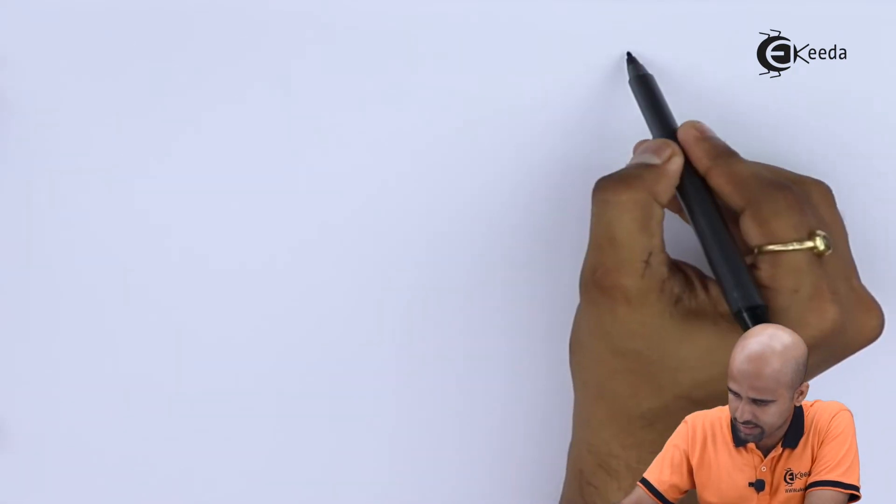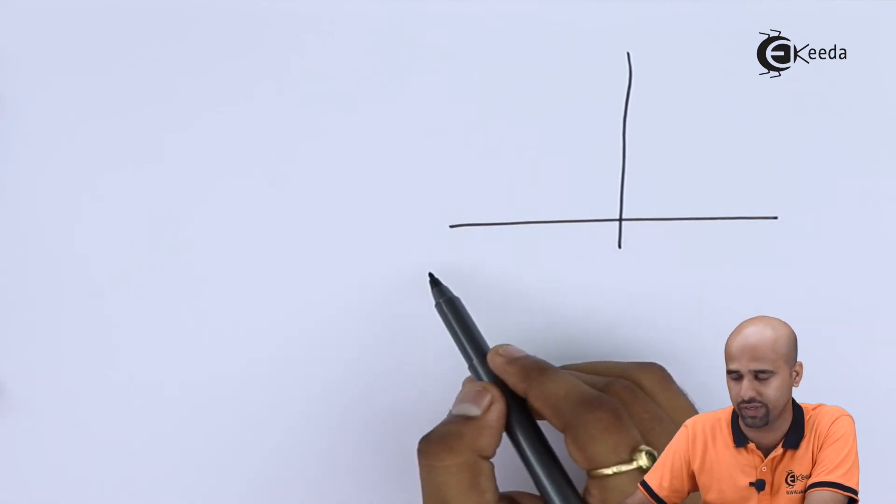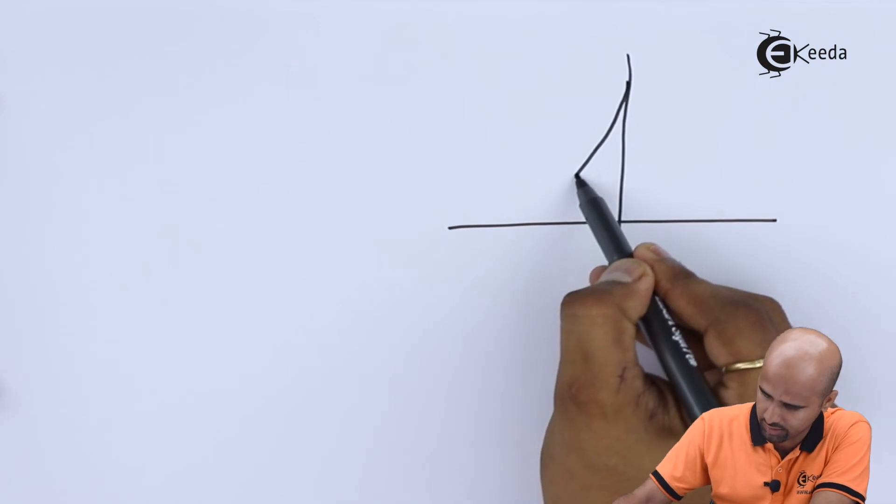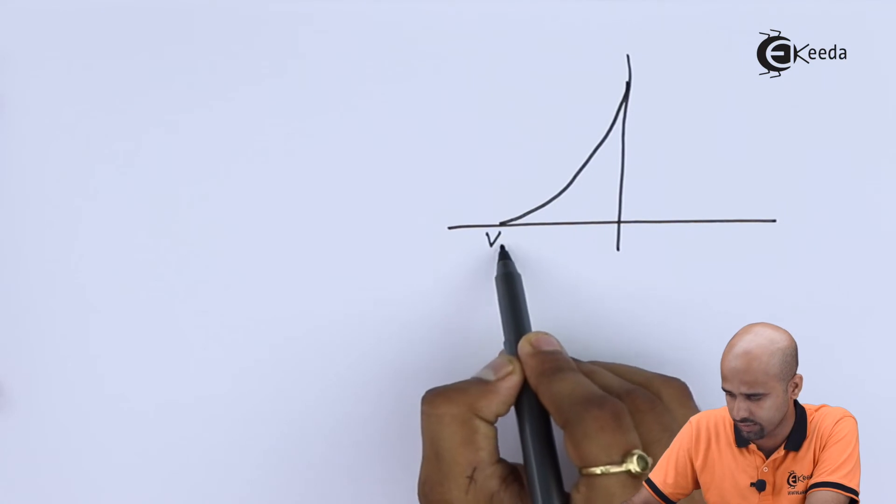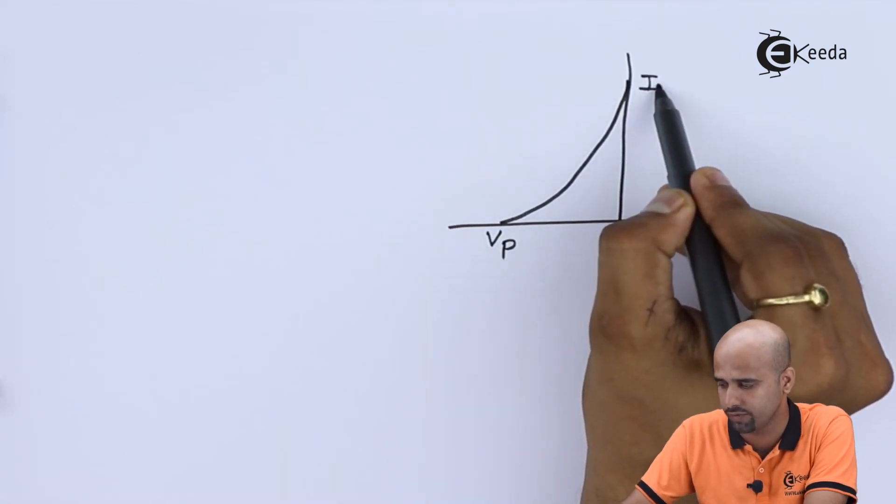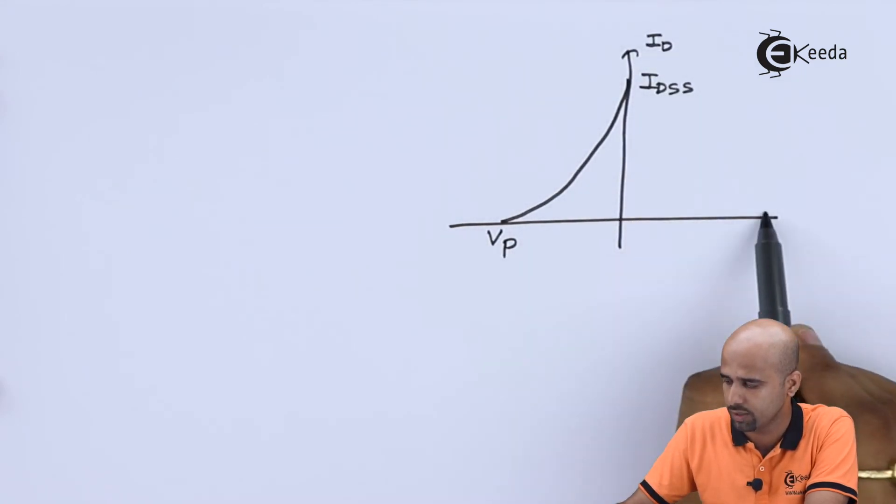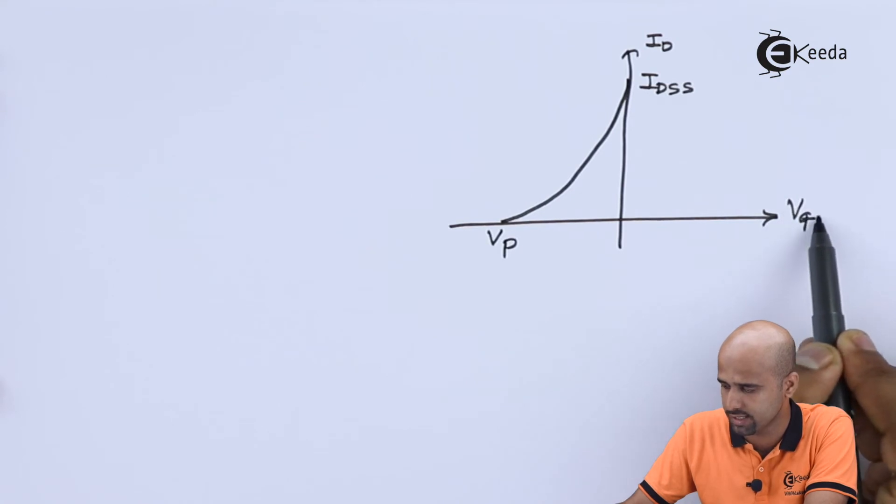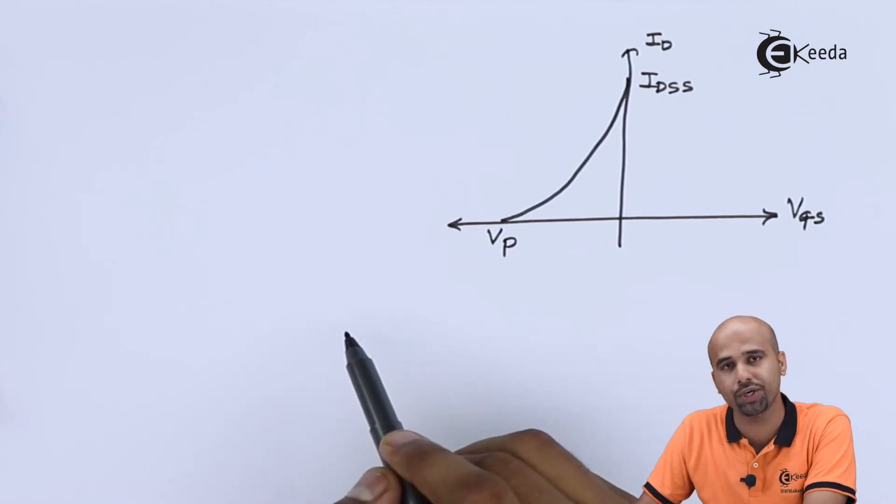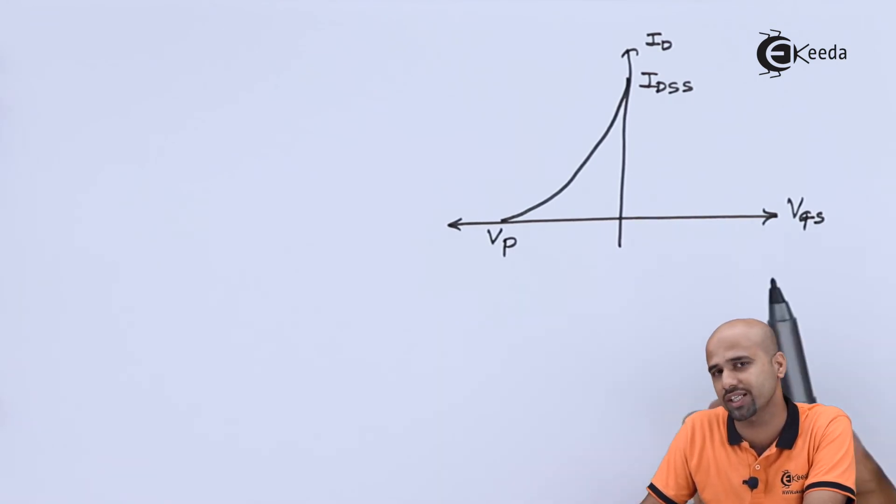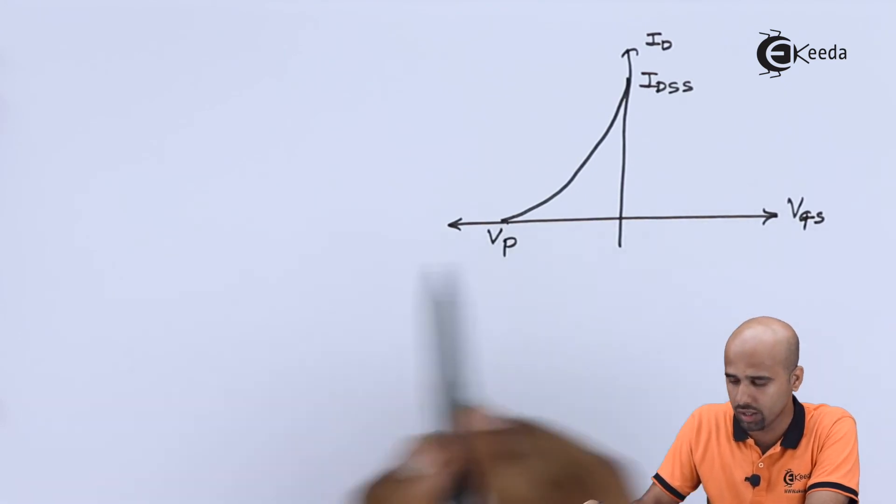So for suppose, let's say that we are having N channel JFET. For N channel JFET, in the last video we have learned, this is VT characteristics. Here we will be getting VP, here we are getting IDSS. Y axis is ID, X axis is VGS. And important thing is ID should not reach beyond IDSS, VGS should not reach beyond VP.